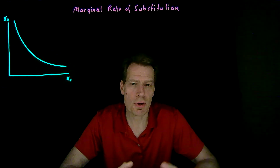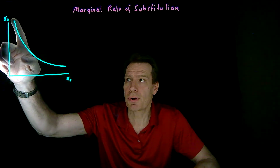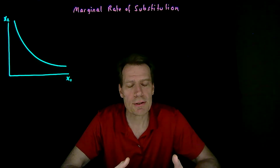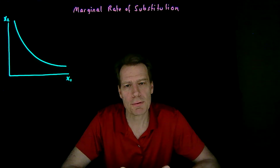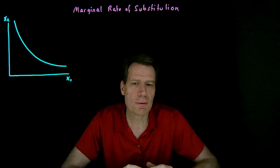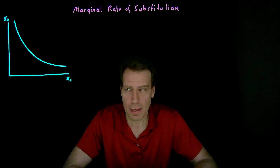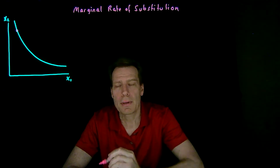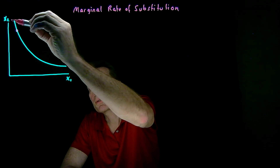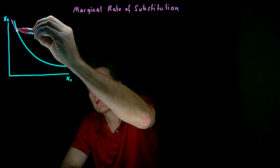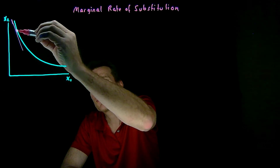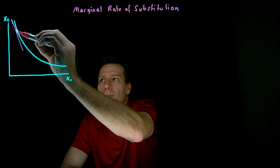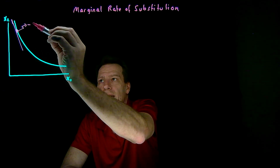There isn't just one slope. The indifference curve starts out steep and gets shallower and shallower, so the slope is changing along the indifference curve. Let's take this bundle for example. Here we have a slope that's relatively steep — in other words, the line that's tangent to the indifference curve at that bundle has a relatively steep slope. Suppose that slope is minus 3.